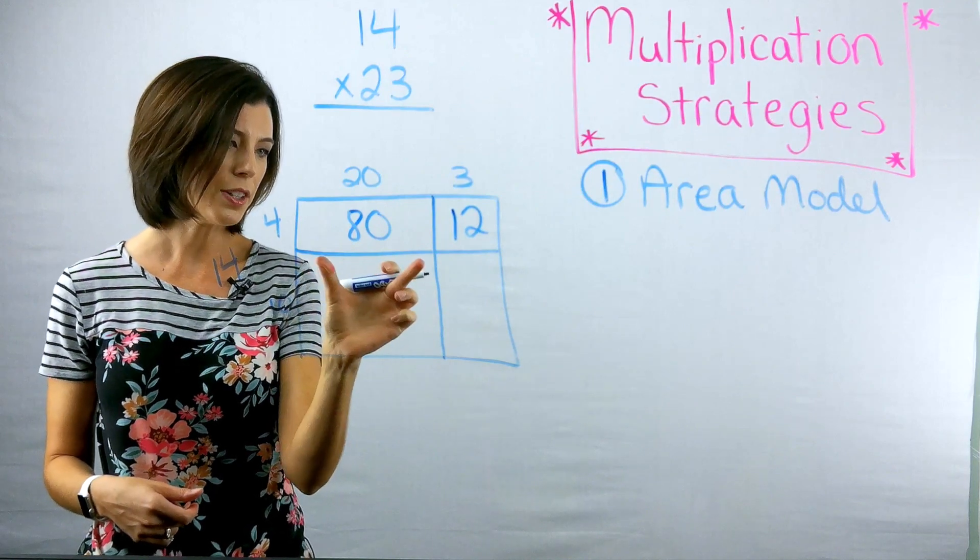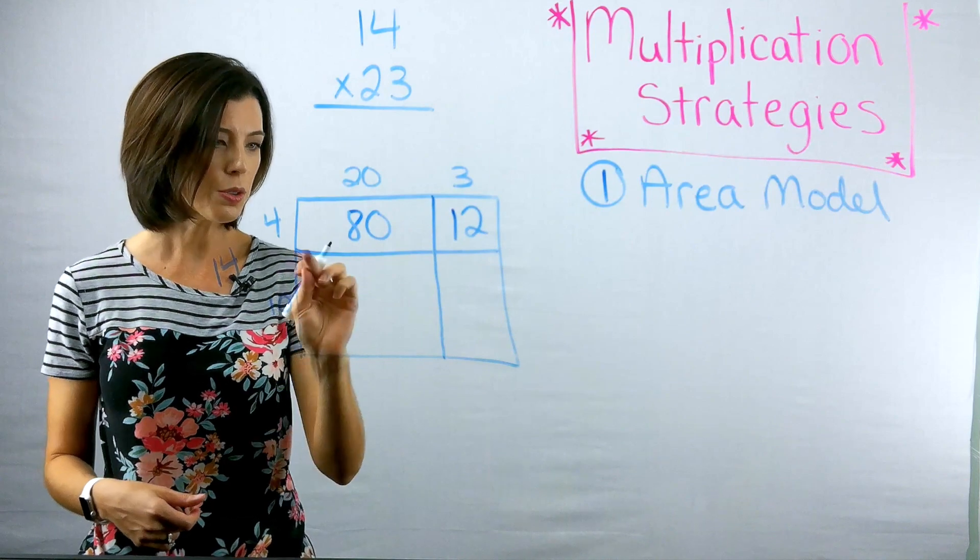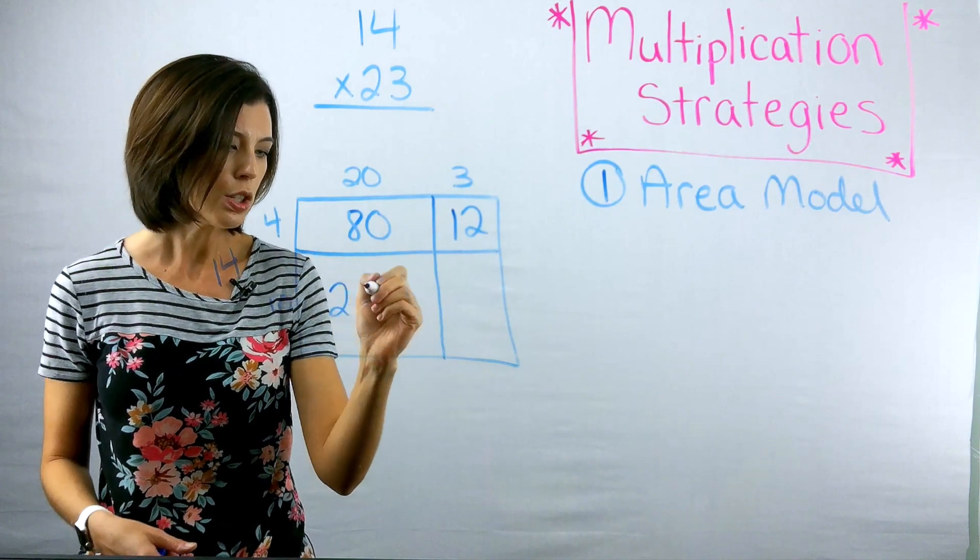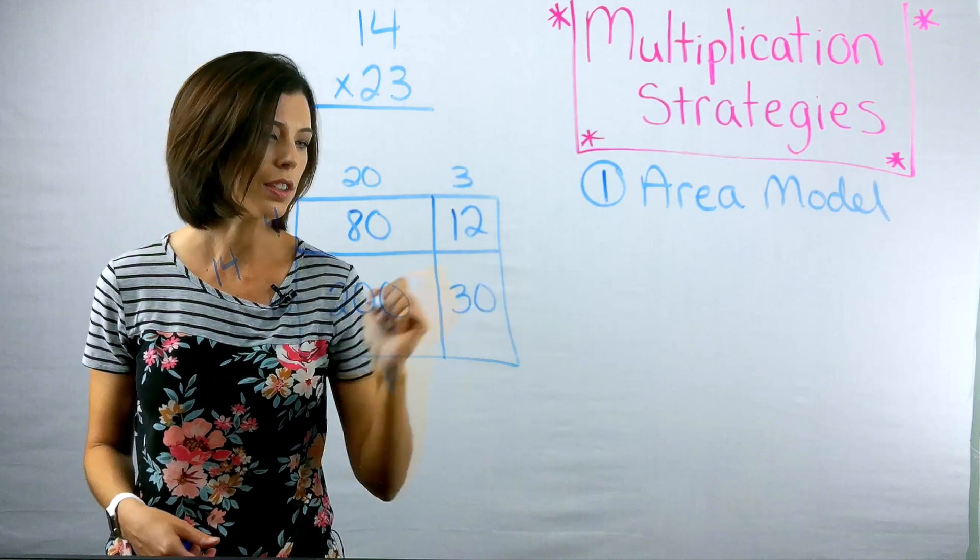Next, I'm going to do 10. And I know that this side is 20, because so is this length right there. So 10 times 20, which would be 200. And then I have 10 times three, which gives me 30.